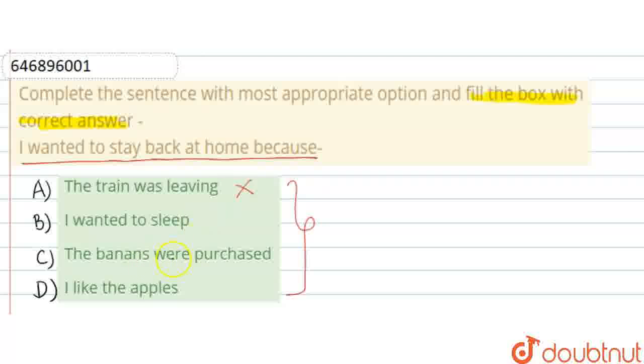Let's see Option C: 'The bananas were purchased'. Because the bananas were bought—no, this is not our option. Option D: 'I like apples'. Because I like apples—no, this is also not our option.